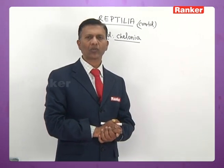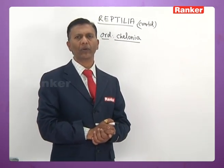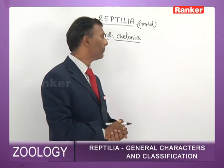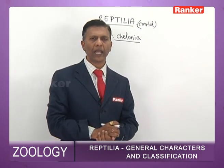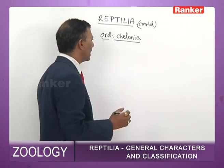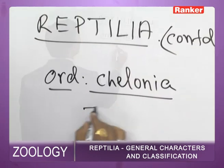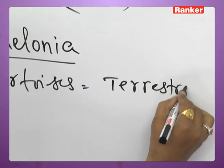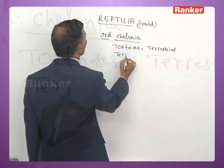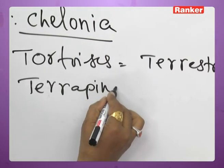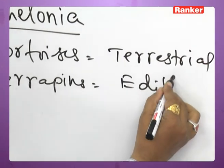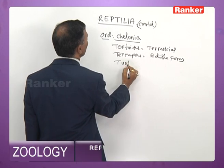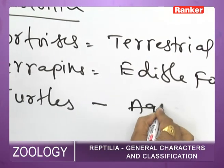Cotylosauria is represented by Seymouria, which is an important missing link between Amphibia and Reptilia. Chelonia includes three forms: tortoises (terrestrial), terrapins (edible freshwater forms), and turtles (aquatic forms).